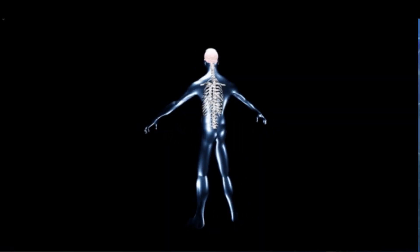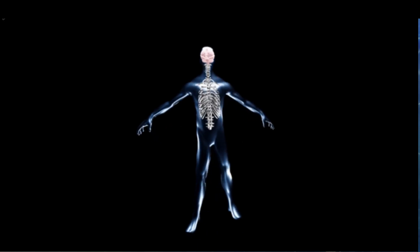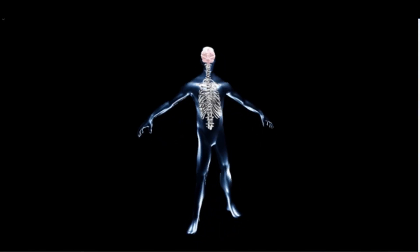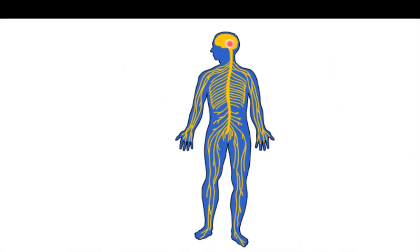The spinal cord is an extension of the medulla oblongata. It runs backwards inside the backbone up to its lower end. It is also made up of interneurons. The spinal cord creates a link between the brain and different body parts. It also controls some reflex actions.